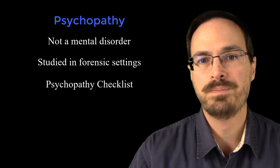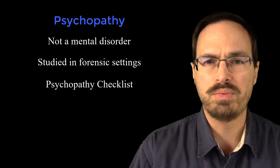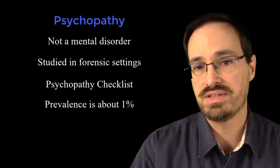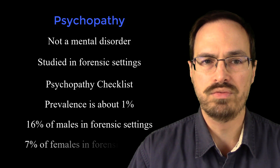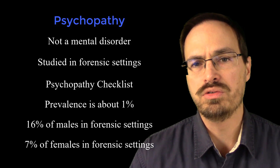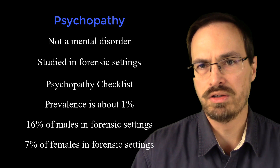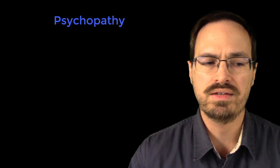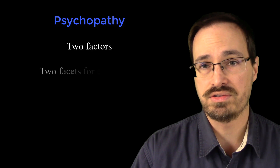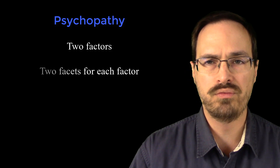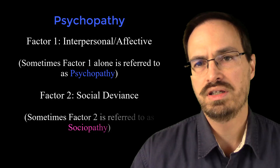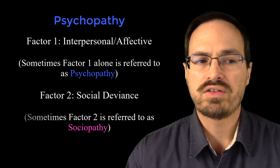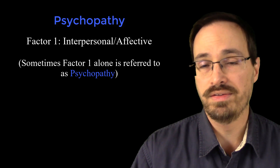Psychopathy affects about 1% of the general population, and in forensic settings about 16% of males and about 7% of females are affected. Using the PCL-R, psychopathy can be divided into two factors, each of which can be divided into two facets — giving a total of four facets. Factor 1 is interpersonal and affective, and Factor 2 is referred to as social deviance. Factor 1 has two facets: interpersonal and affective.